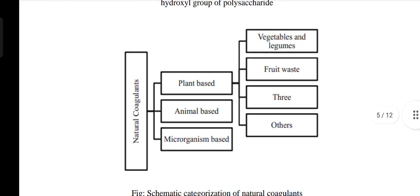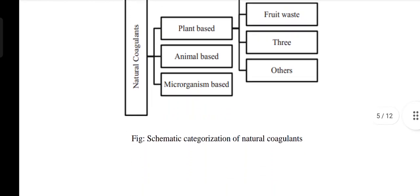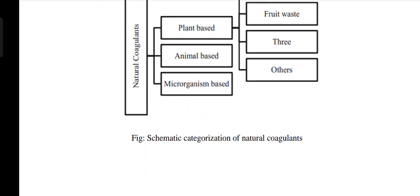This is the classification of natural coagulants. Natural coagulants can be classified as plant-based, animal-based, and microorganism-based. Plant-based natural coagulants are further classified as vegetables and legumes, fruit waste, and trees. Animal-based coagulants are further divided into subcategories, and microorganism-based coagulants can be bacteria, viruses, and fungi.